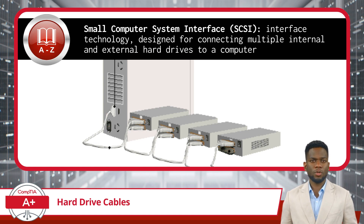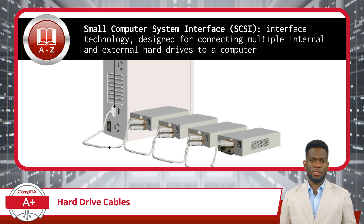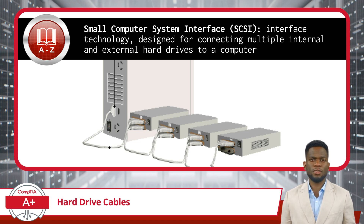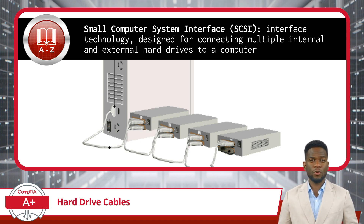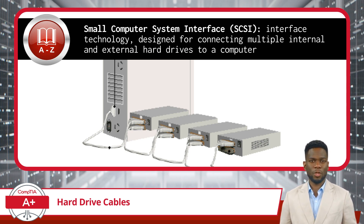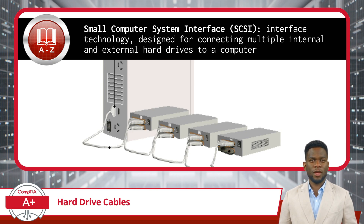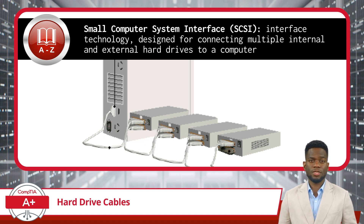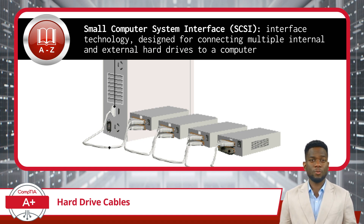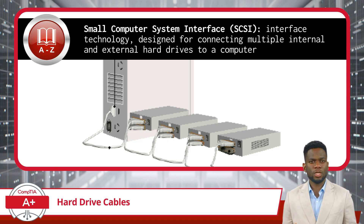The first hard drive cable type I will cover is the Small Computer System Interface, or SCSI. SCSI is an older interface technology, originally designed for connecting multiple internal and external hard drives to a computer. Although SCSI was once widely used in servers and high-performance workstations, it has largely been replaced by newer technologies due to cost and complexity. At its core, SCSI operates by connecting multiple devices together in a chain-like fashion.